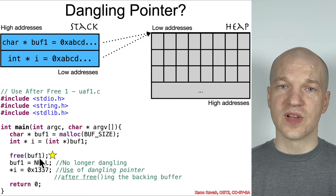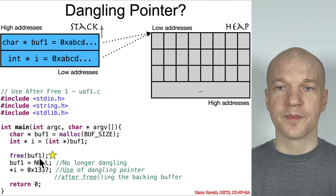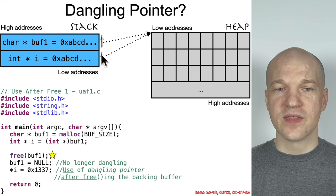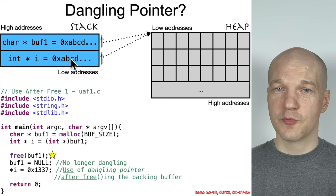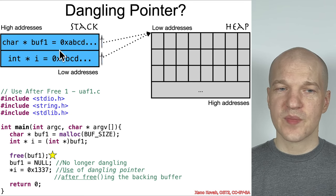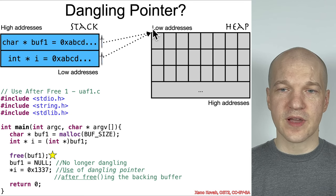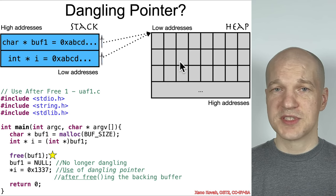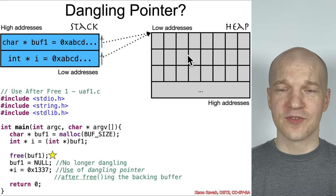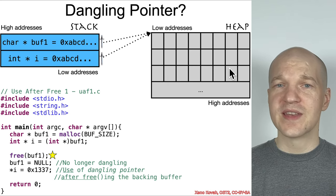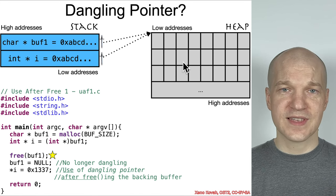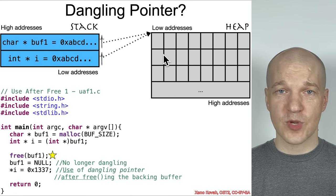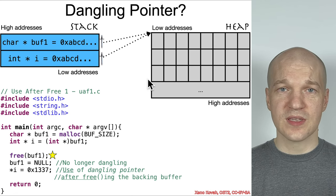Then we free buff1 — boom, and it got destroyed. Now all of a sudden these pointers are what we term dangling pointers, because they still absolutely are pointing to this memory address. But it has been freed — it's still gray because we didn't fill anything in, never initialized it, never touched it. It has disappeared. It is now no longer available for use by this code, so someone else somewhere else on the system could be using that memory.